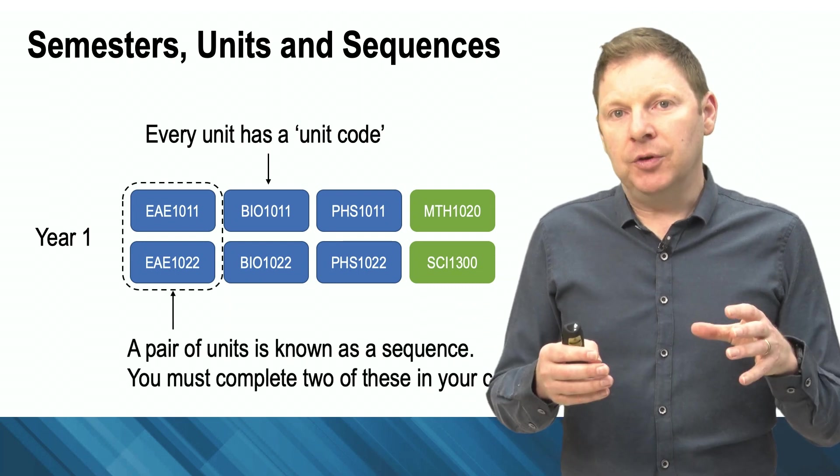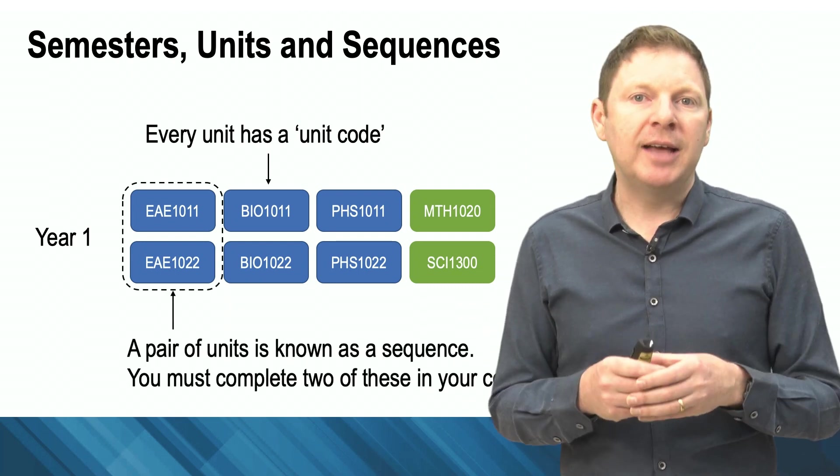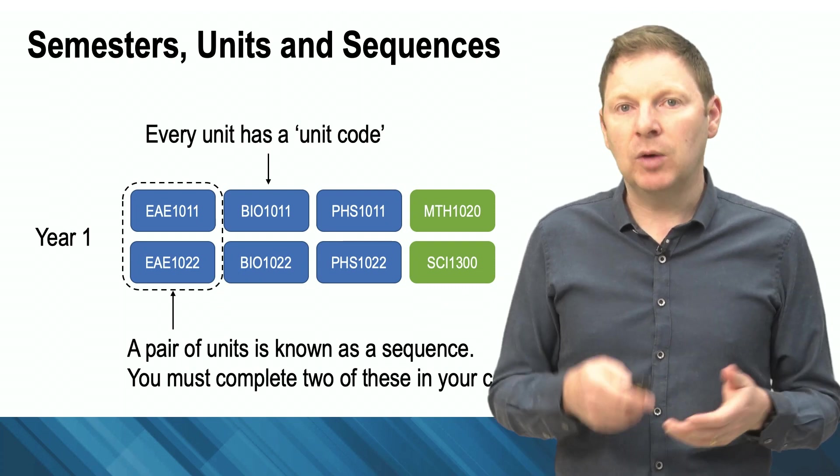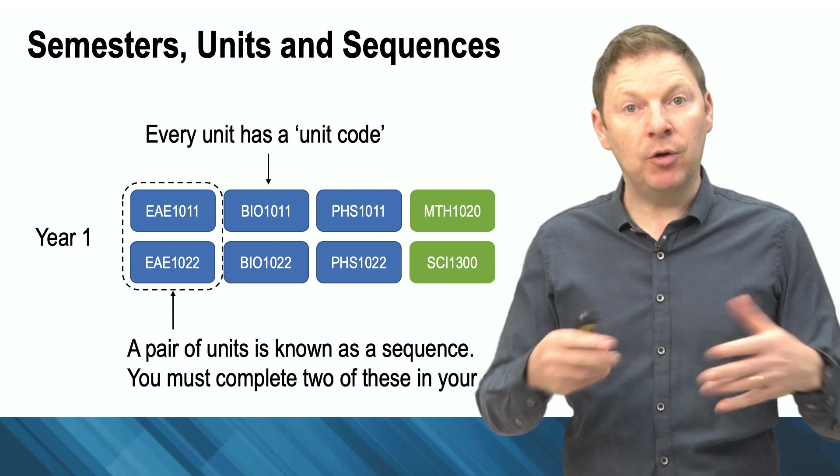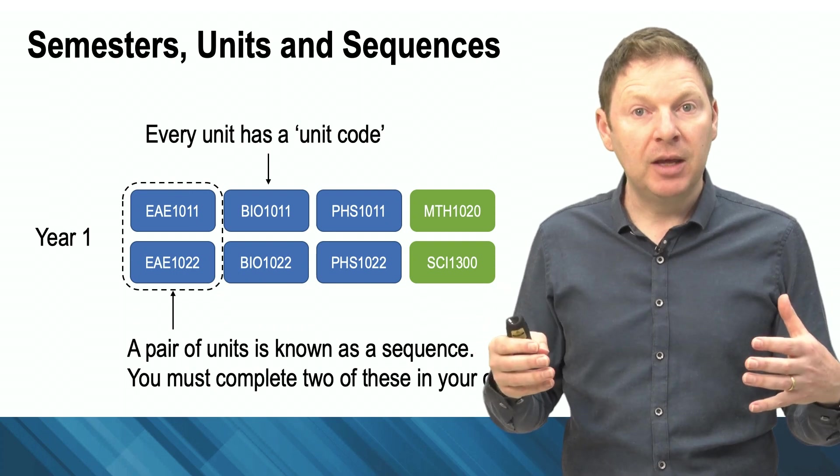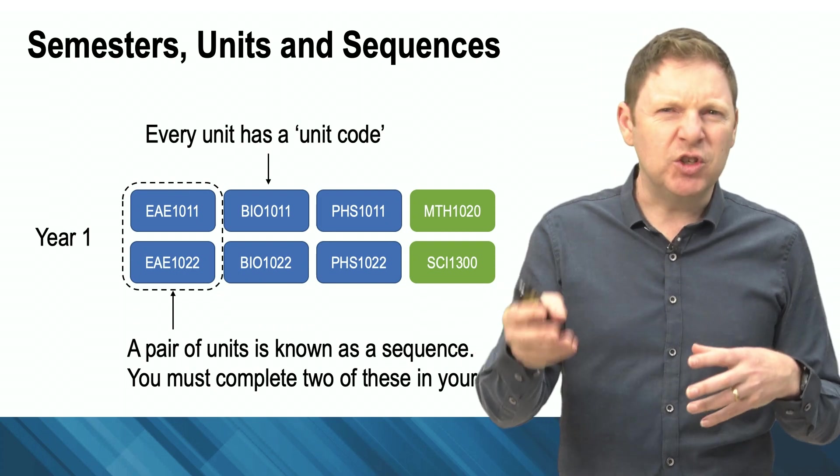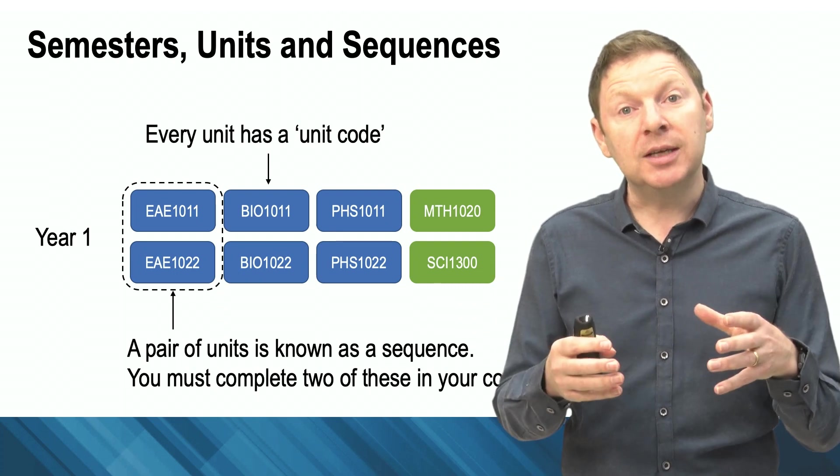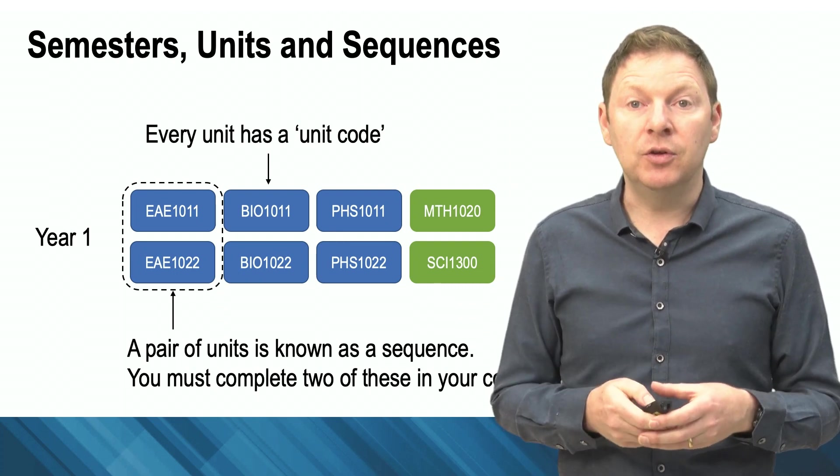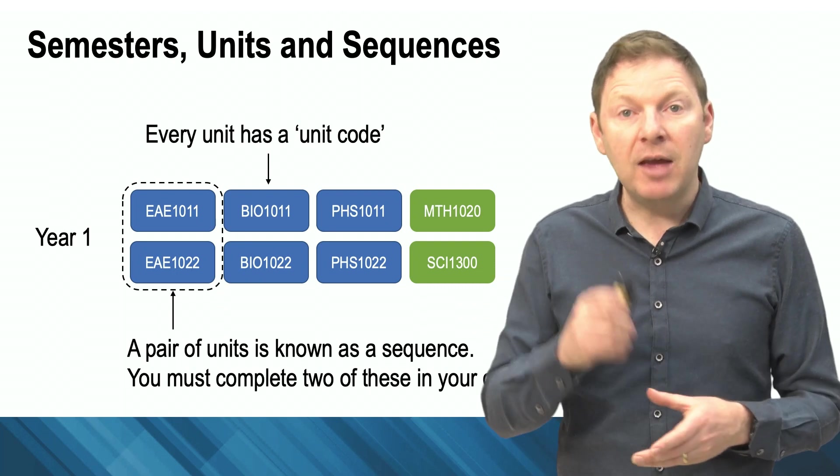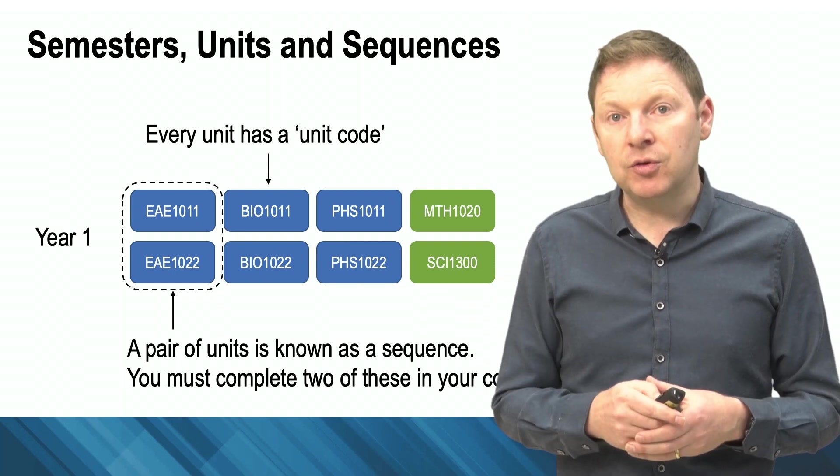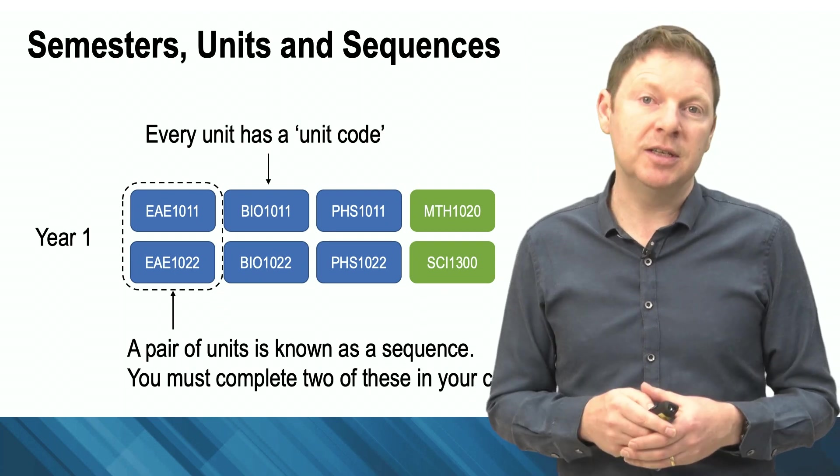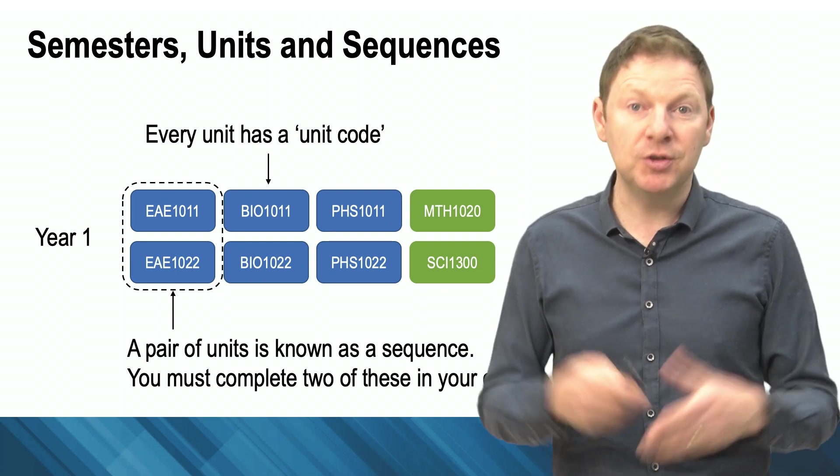A pair of units are often put together as a sequence. You can see here I'm showing you EAE1011-1022. That's our Earth, atmosphere and environment theme: a bit of environmental science, a bit of geology, a few volcanoes, things like that. They put these two units together to make a coherent set of units. We call that a sequence. Every single science student must do two level one, in other words first year, sequences in their course. You'll probably do these in the first year.